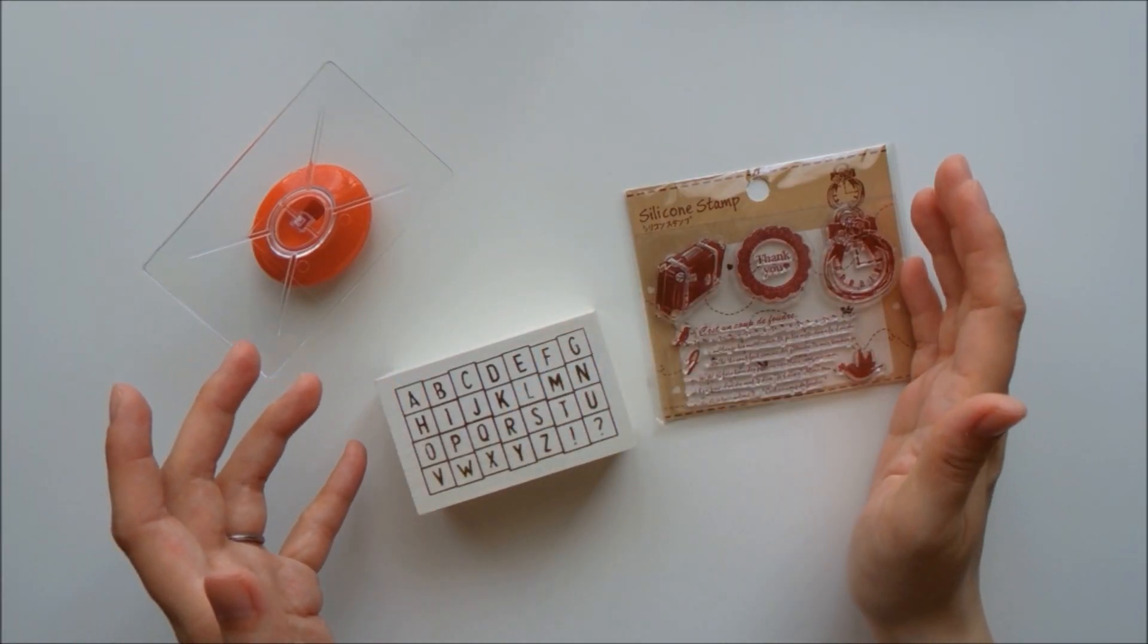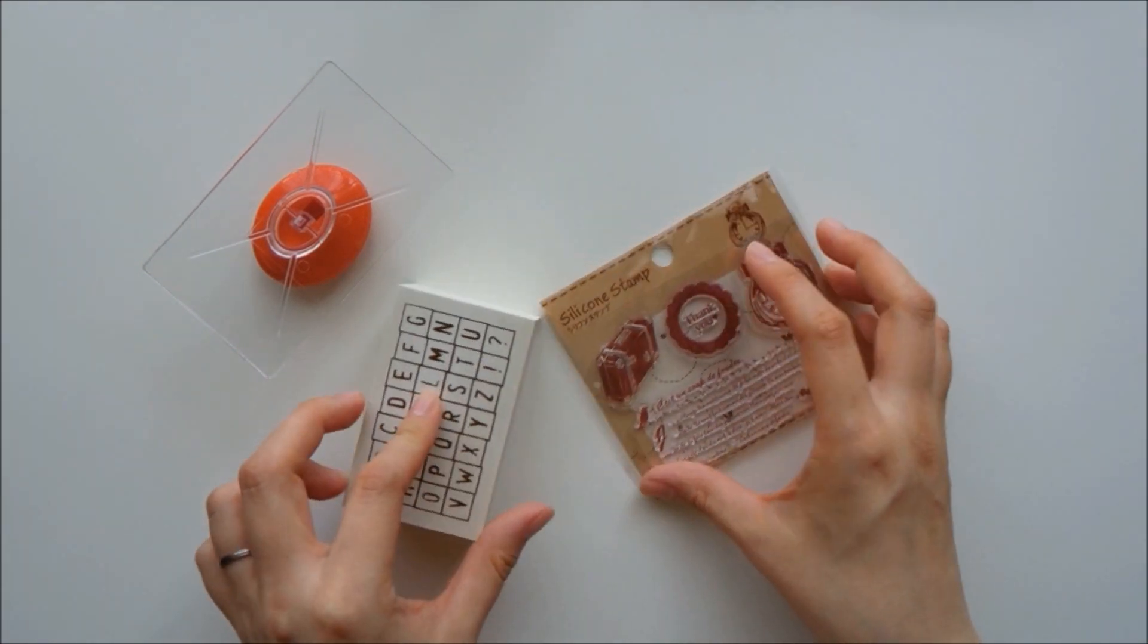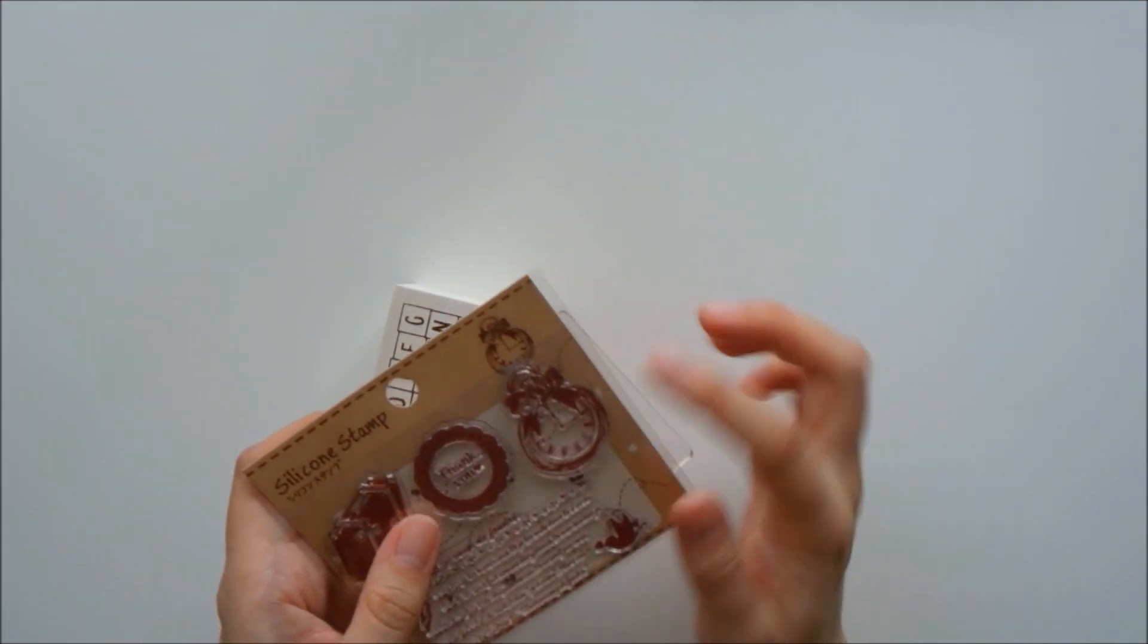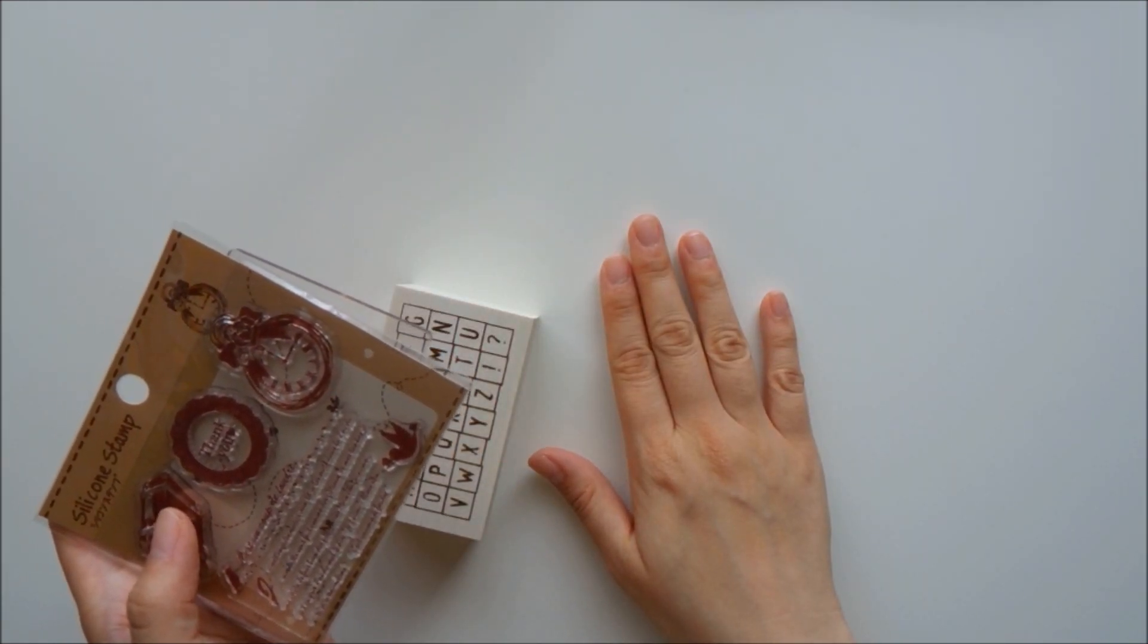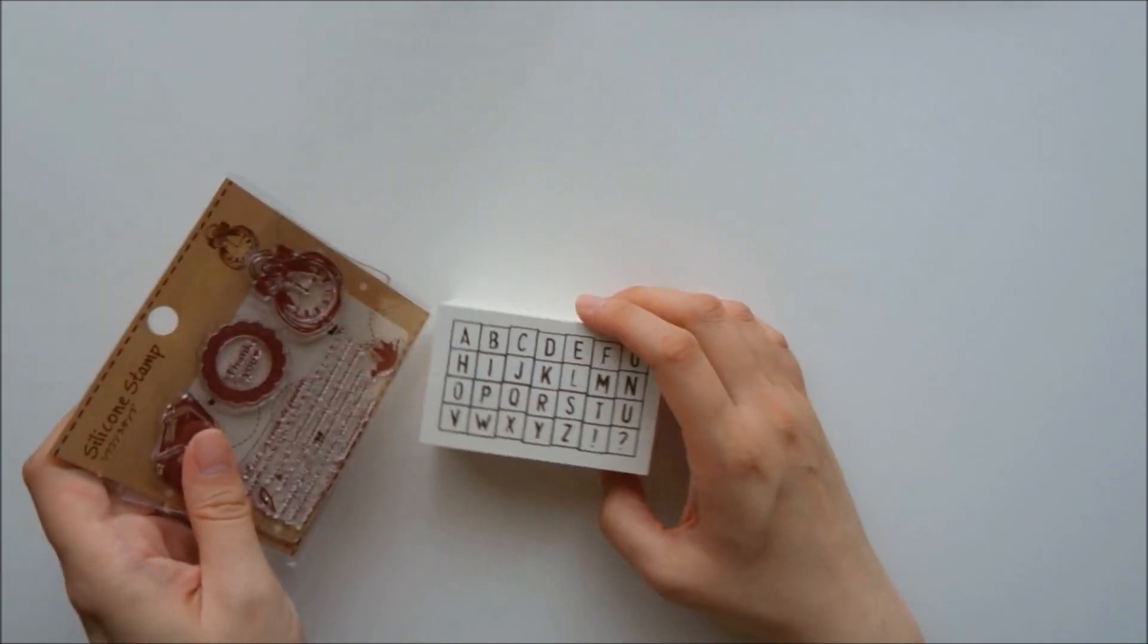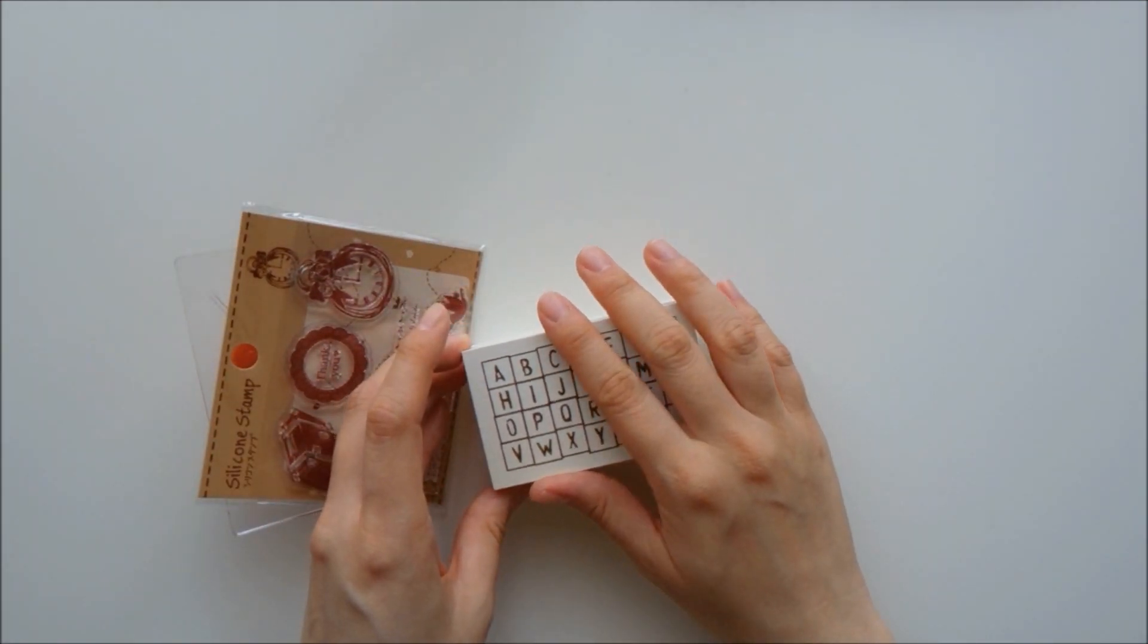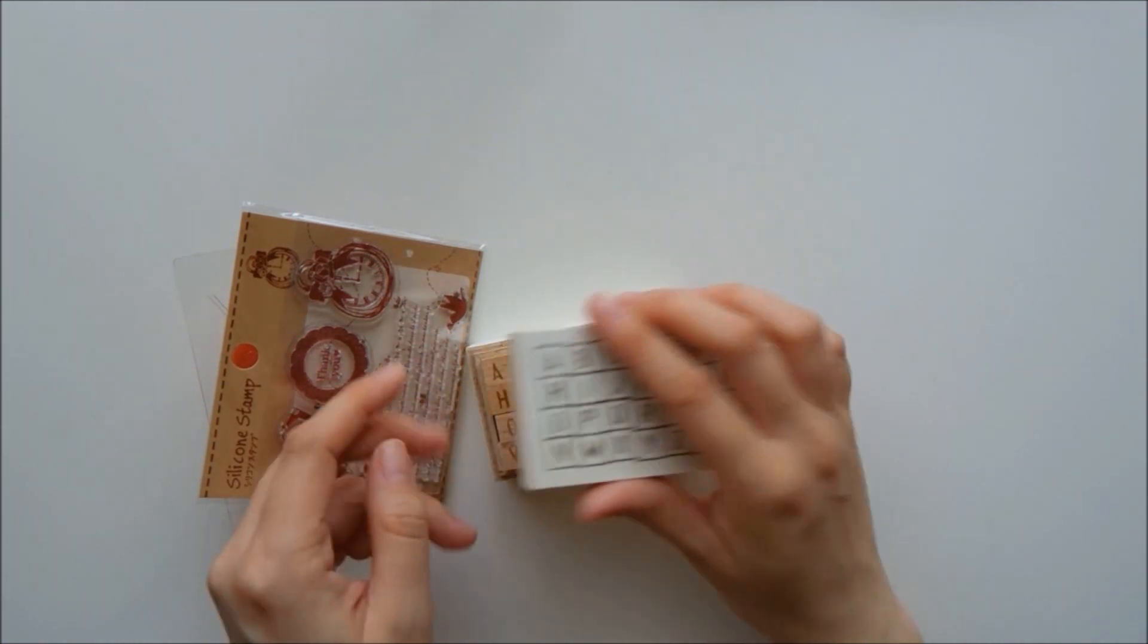The next thing I want to talk about are stamps. I really enjoy stamps because you can use them so many times. I have the silicone ones that you can attach to acrylic blocks and use them many times, whereas stickers, once you stick it on, you can't really use it for another page. I recommend getting something like an alphabet stamp where you can create your own words. For people in the United States, Target sells something similar to this.